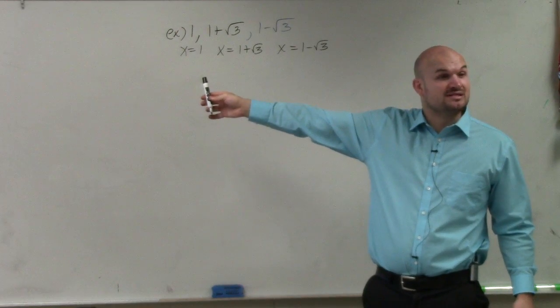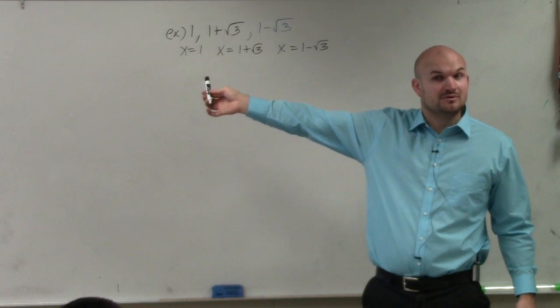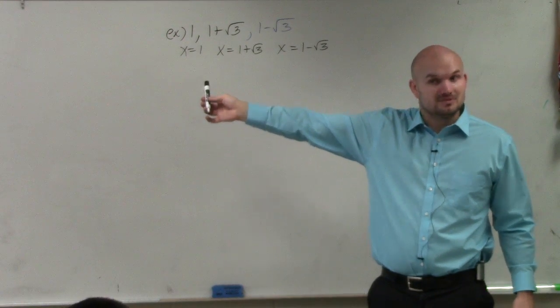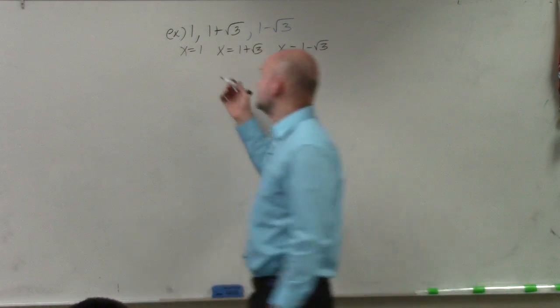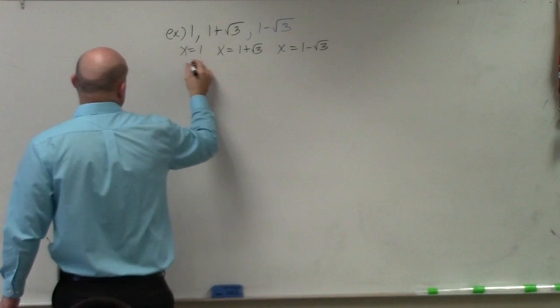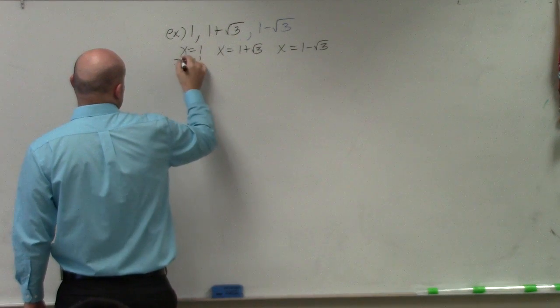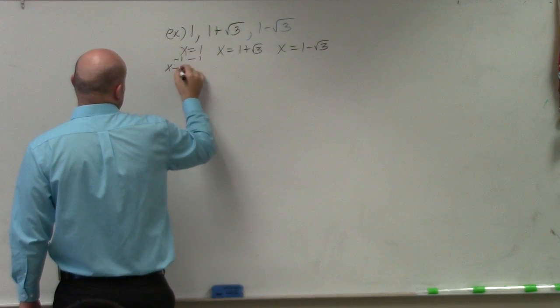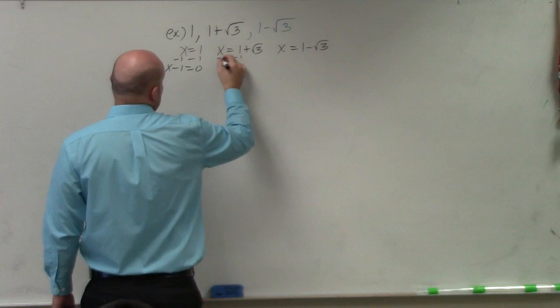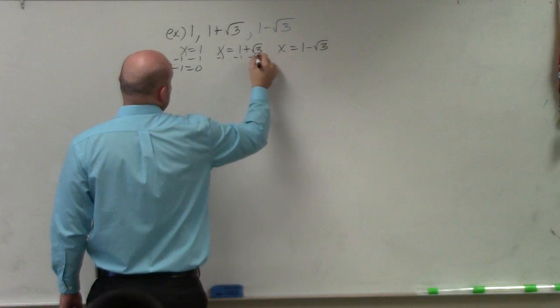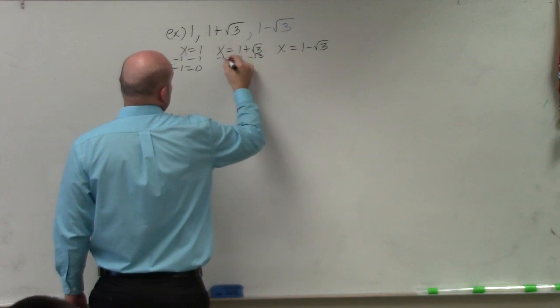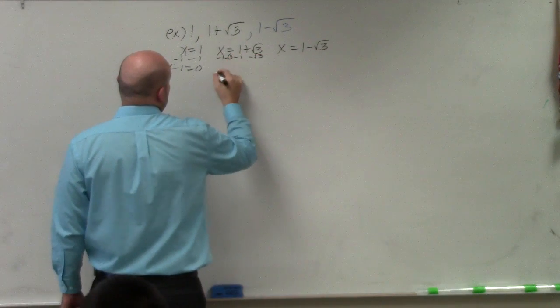And then what we do, we set them equal to zero. So subtract 1, subtract 1, subtract 1, subtract the square root of 3, subtract the square root of 3.